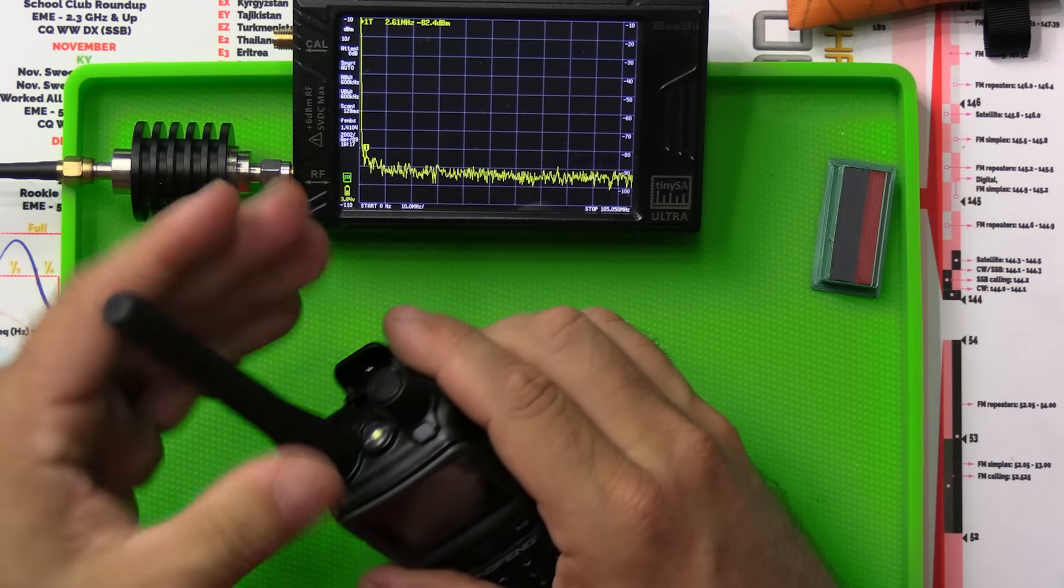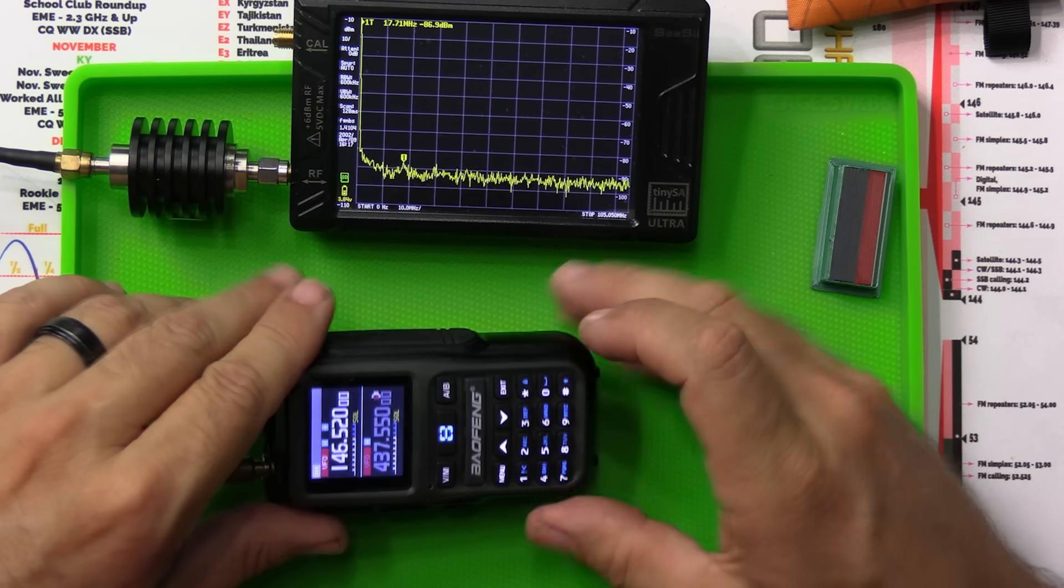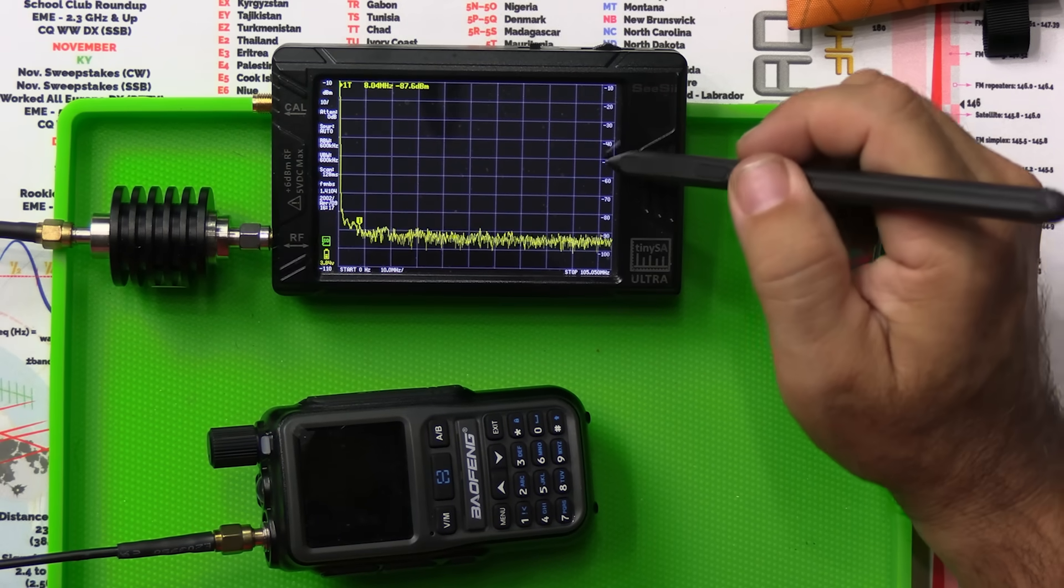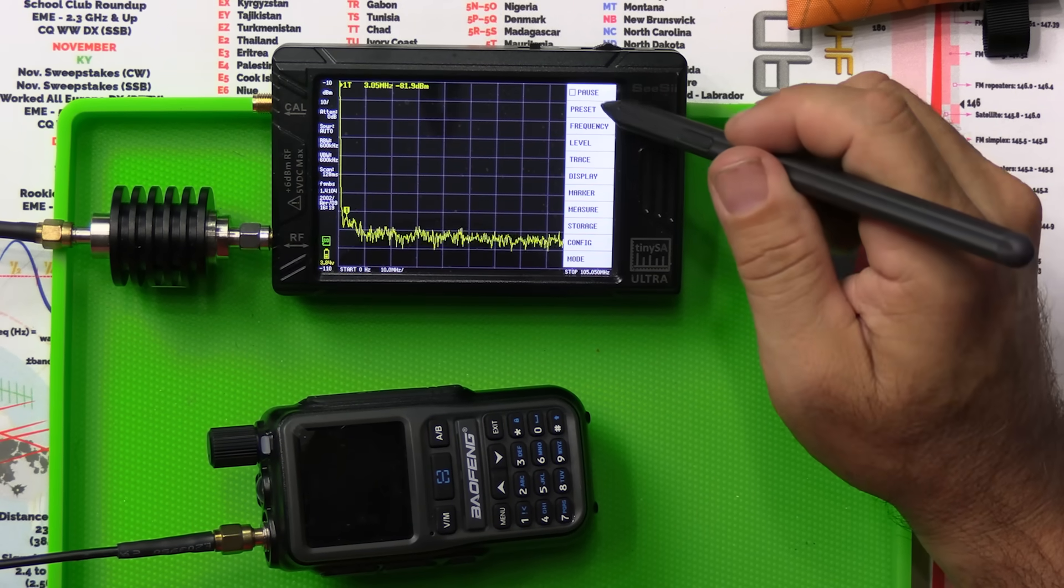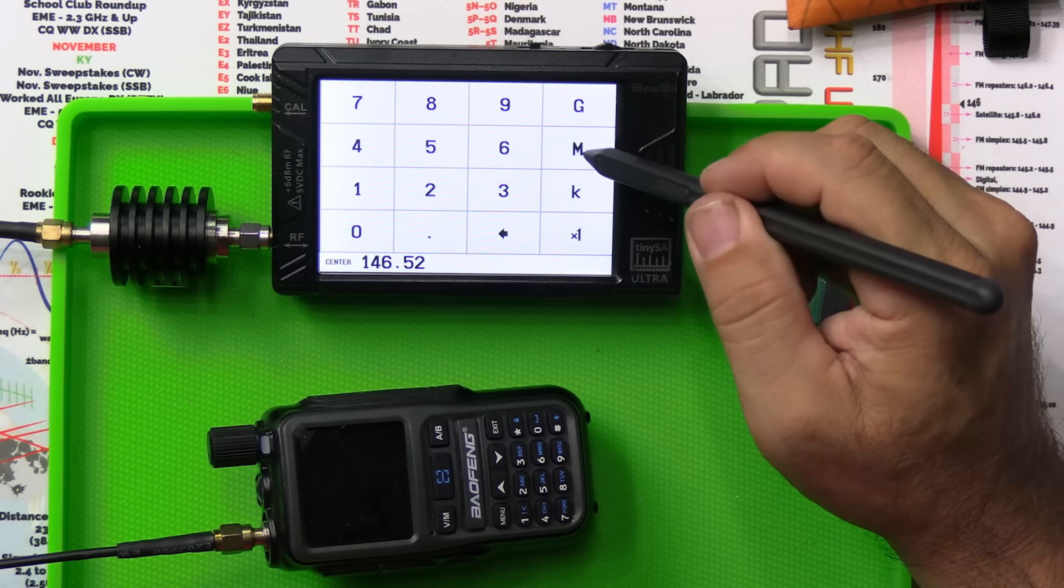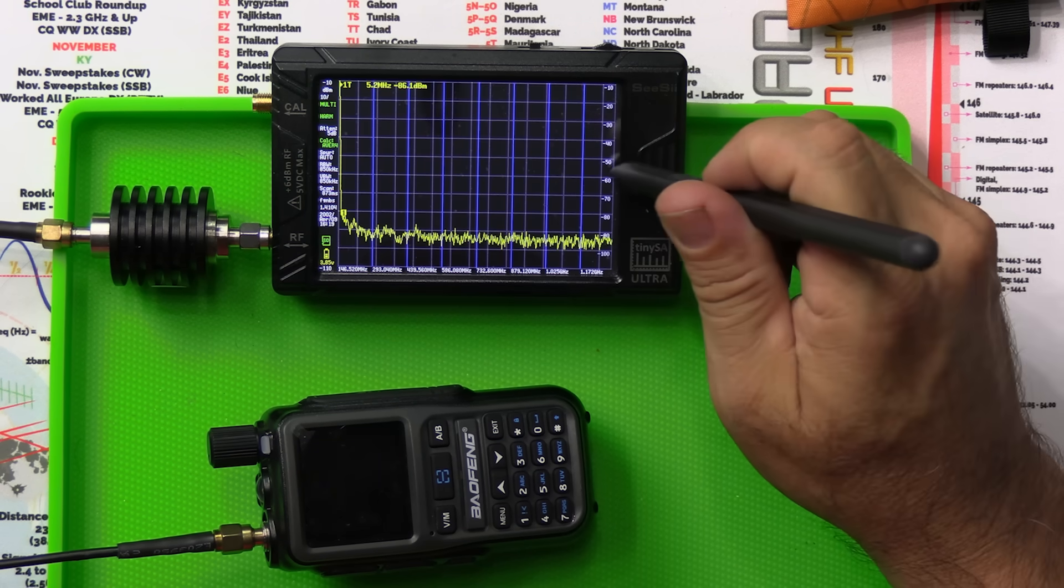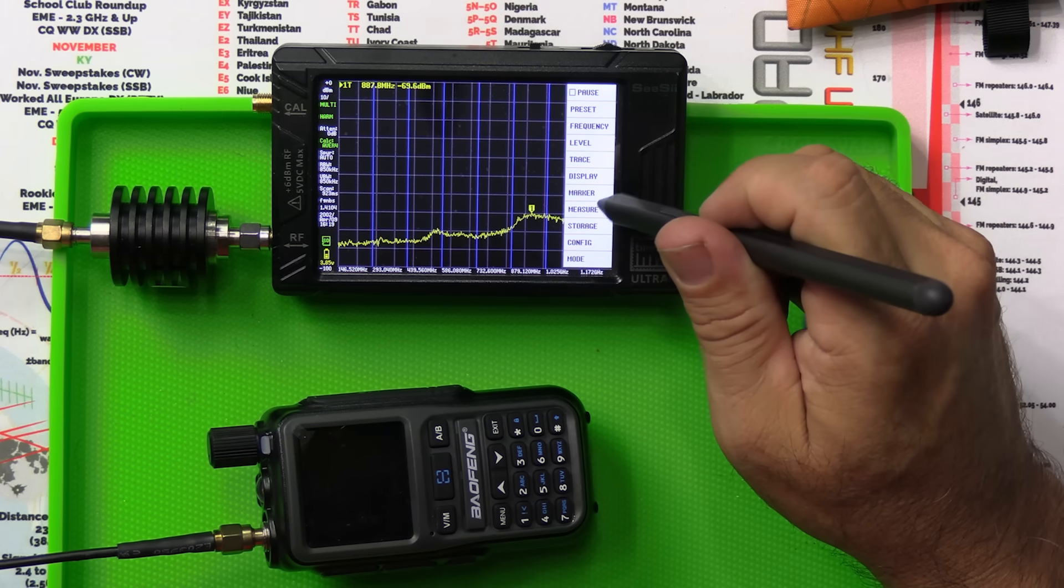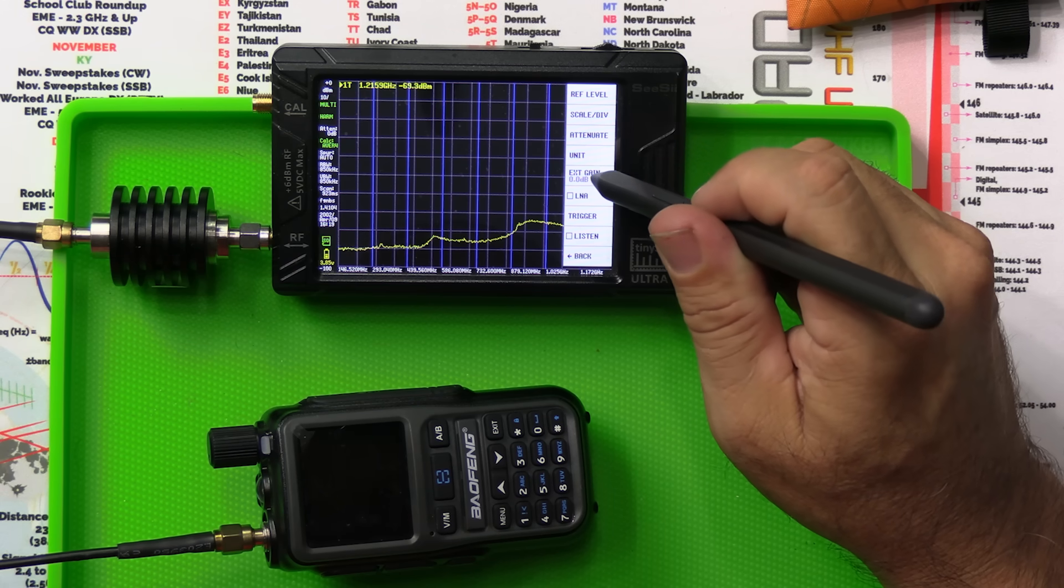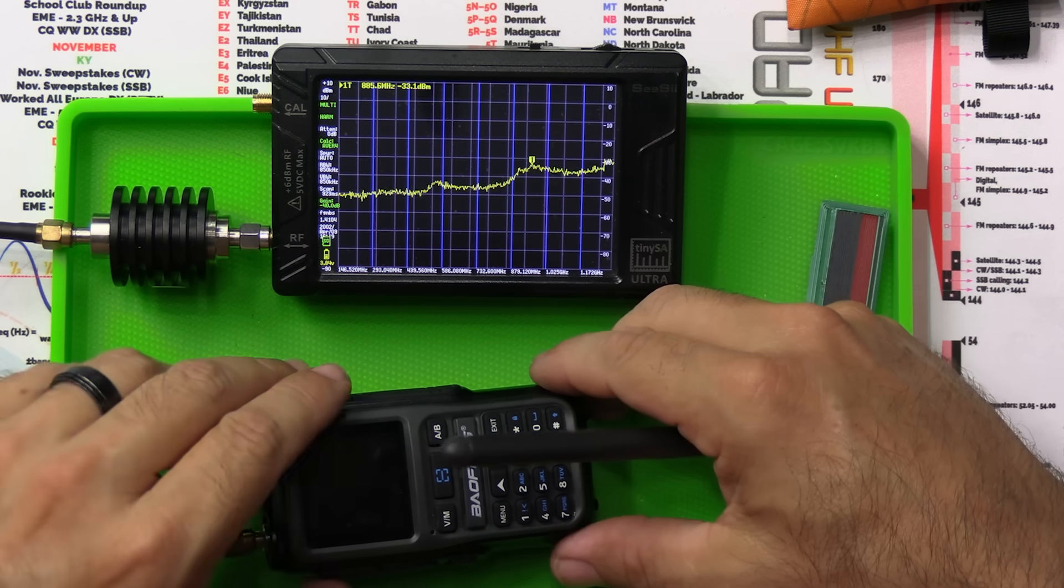So let's hook this up real quick. Two meter calling frequency here. And then we're going to set up our tiny SA accordingly. So we're going to go in here to measure. Harmonic. 146.52 megahertz. Enter it again. And then we're going to go back into level. Ext gain minus 40 times 1.